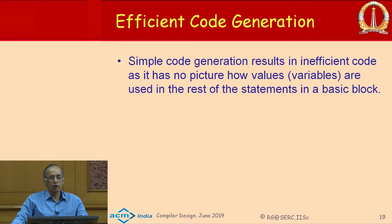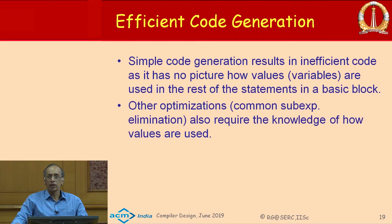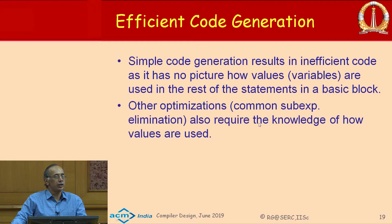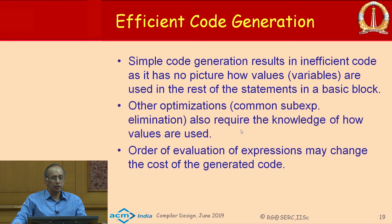The simple code generator has no idea what variables are going to be used in subsequent statements. Even simple optimizations like common subexpression elimination, which is sometimes required in the generated code, it does not have any knowledge to perform. That is because it is considering one intermediate statement at a time. The order of evaluation of expressions may also change the cost, and it does not take that into account.